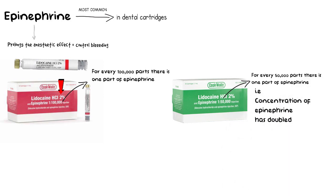If this number decreases to 1 part per 50,000, then the concentration of epinephrine has actually doubled. On the contrary, if the number is increased to 1 part per 200,000 parts, then the concentration of epinephrine is almost half. Using multiple cartridges without knowledge of the maximum recommended dose of epinephrine or local anesthetics can result in an overdose reaction.